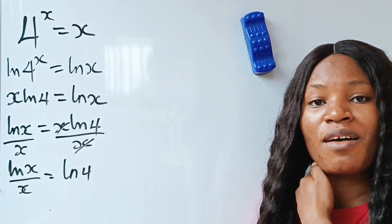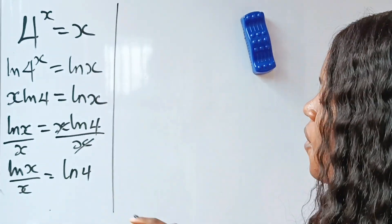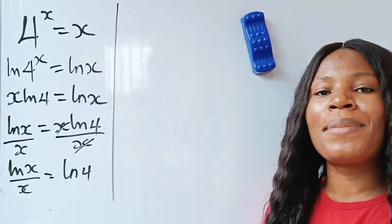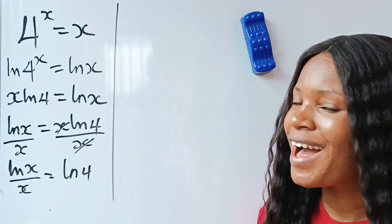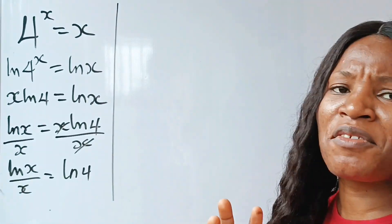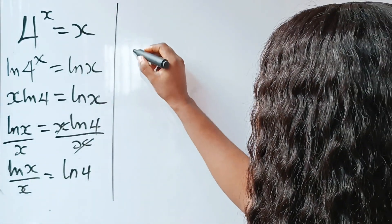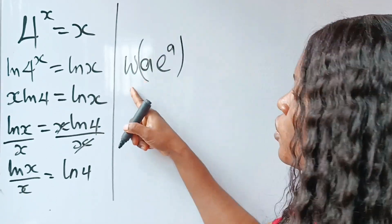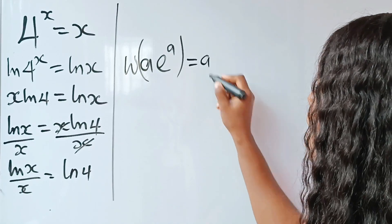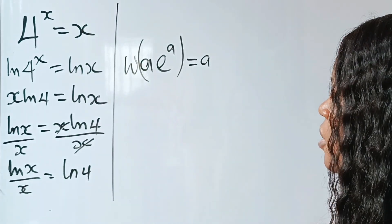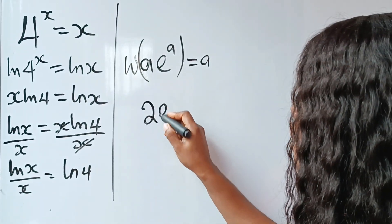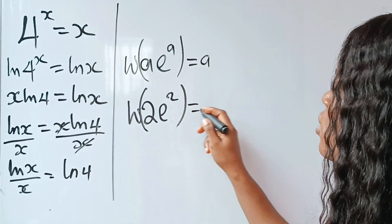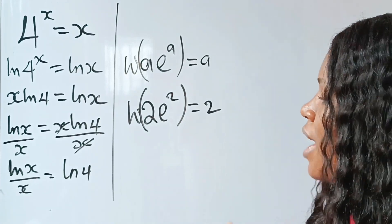Now let me introduce the wonderful function I've been talking about, because that is the only way forward here. It's the Lambert W function — a life-saving function. This function states that when you have a·e^a and you apply the W function, you get a as your answer. So for example, W(2·e^2) = 2.